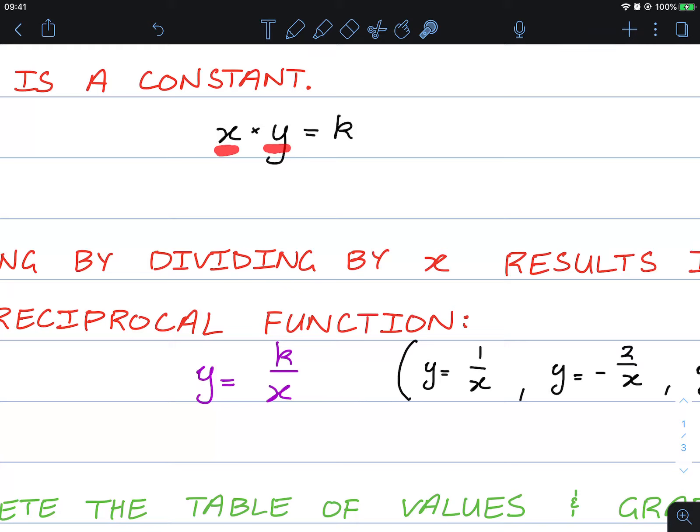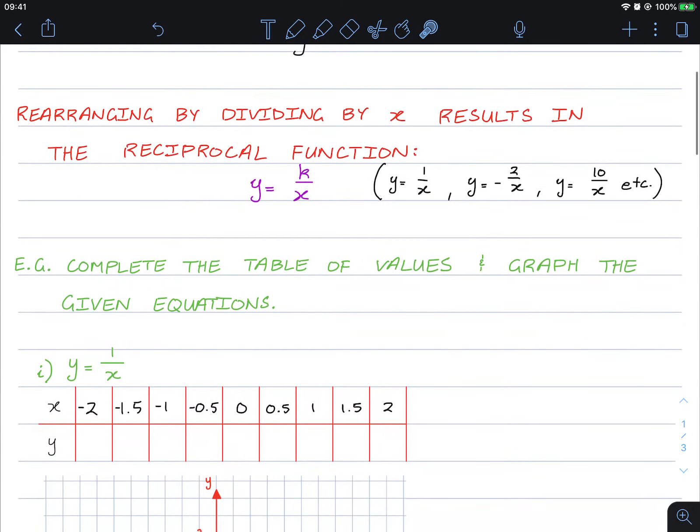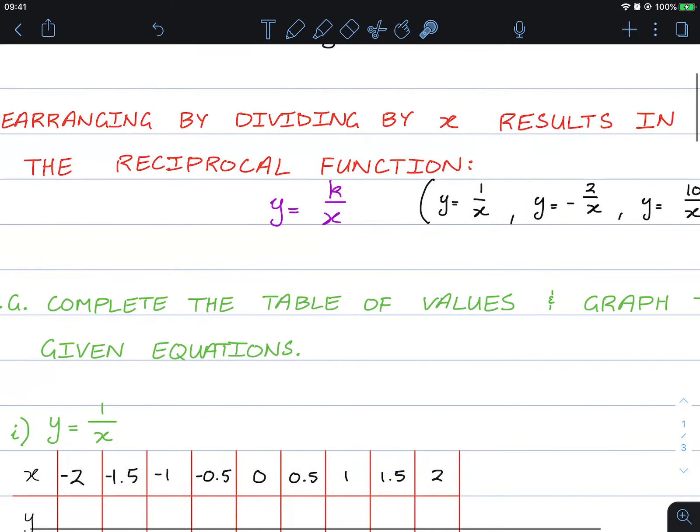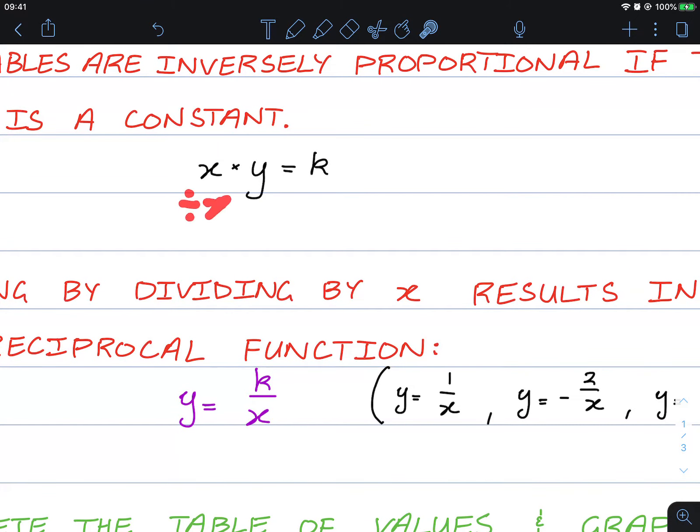If we take two values x and y, and keep changing the values of x and y and keep multiplying them, and they're always the same constant, they are inversely proportional. If we rearrange by dividing by x, we divide both sides.